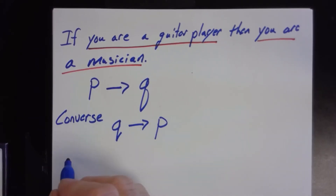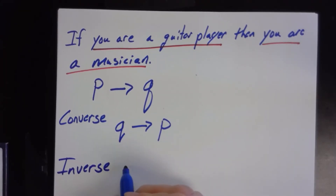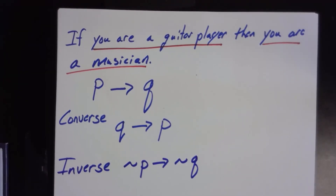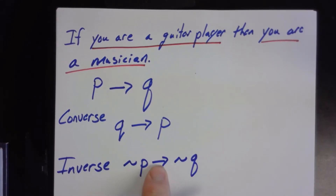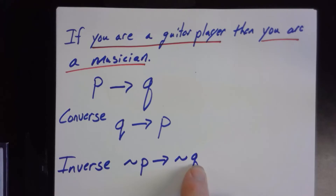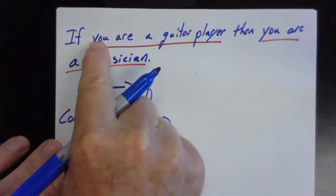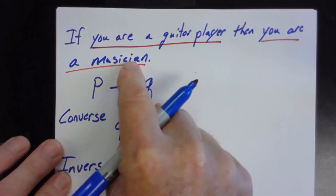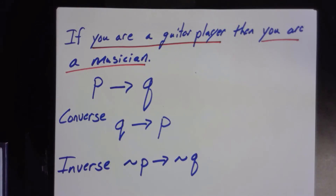Then we need to talk about the inverse. The inverse looks like this: ¬P → ¬Q, where the squiggly symbol means negation. So instead of 'if you're a guitar player,' the inverse is 'if you are not a guitar player, then you are not a musician.' Notice: I did not change the order — I only negated both the hypothesis and the conclusion.